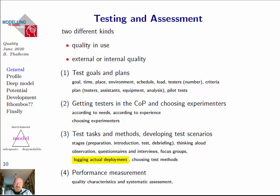We could also use what people use in experimental sciences like chemistry. You develop a quality-in-use, external, and internal quality framework by developing test goals and plans, by getting testers in the community of practice, choosing the real experimenters, deriving test tasks and methods, developing test scenarios, and finally performing a performance measurement. There could be a framework for evaluating things in a systematic manner.